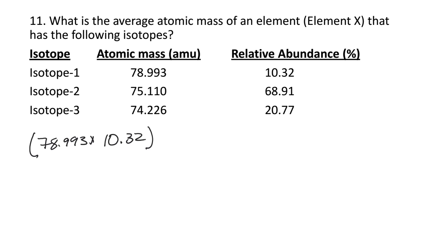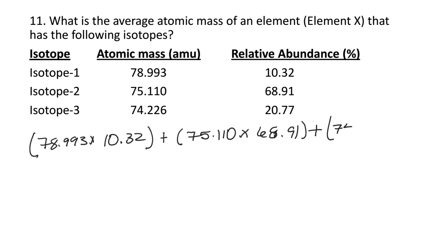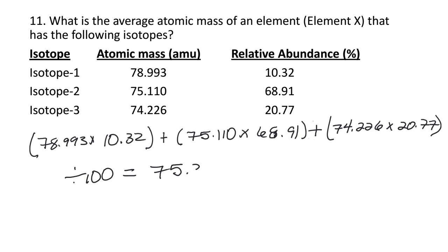I'm doing it the easy way — putting it in the calculator exactly as written, using parentheses. So it's (78.993 × 10.32) plus (something × 68.91) plus (74.226 × 20.77), all divided by 100. When I put this all in the calculator, I get 75.33 AMU. I'm rounding it to two decimal places because the relative abundances are given to that precision.